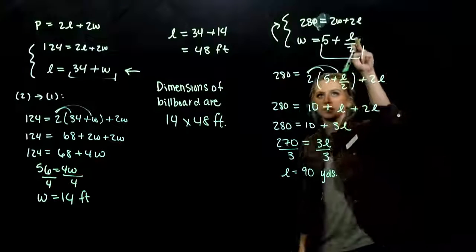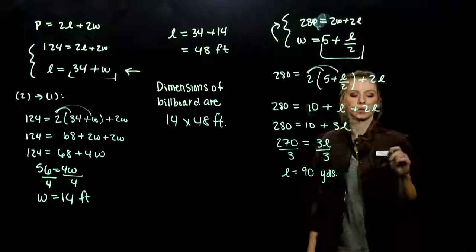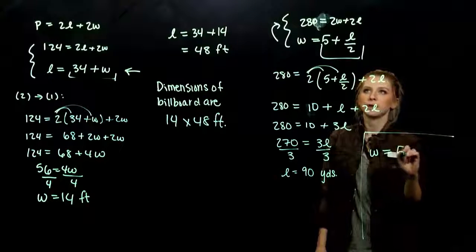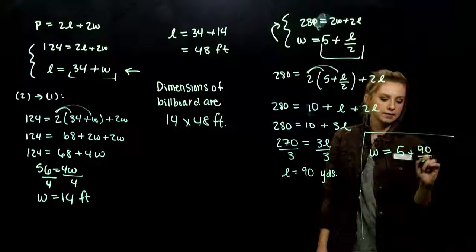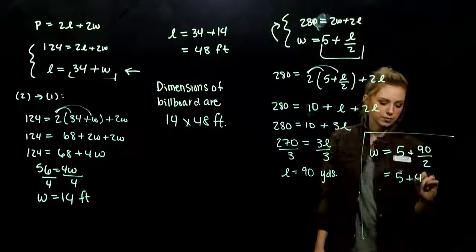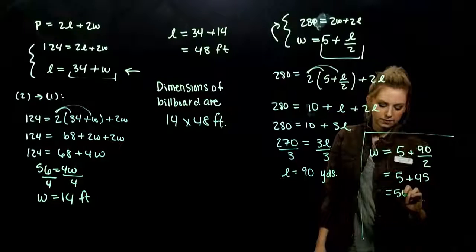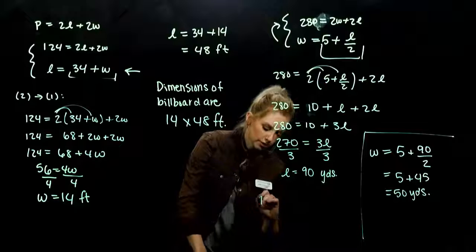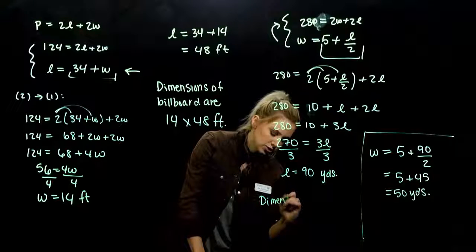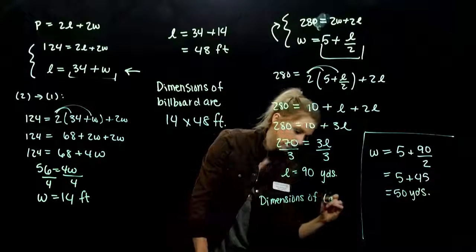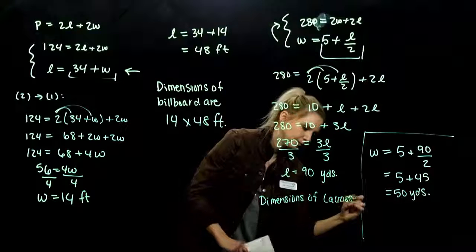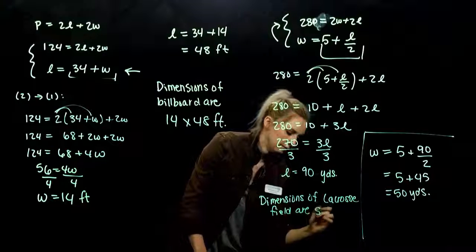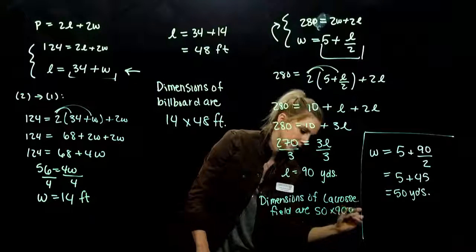So the easiest one to plug back into, again, is the second equation. So solving for W: W is 5 plus 90 divided by 2. So 5 plus 45 gives us 50 yards. So the dimensions of the soccer field are 50 by 90 yards.